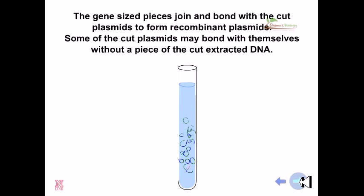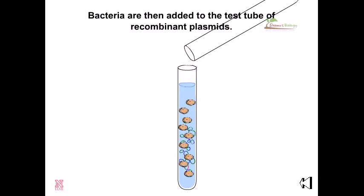The cut plasmids are then mixed together with the gene-sized pieces of DNA. The gene-sized pieces join and bond with the cut plasmids to form recombinant plasmids. Some of the cut plasmids may bond with themselves without incorporating a piece of the extracted DNA. Bacteria are then added to the test tubes containing the recombinant plasmids.